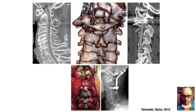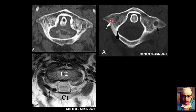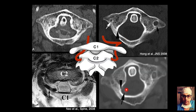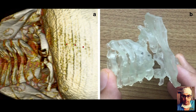In one case example, surgeons recognized a persistent first intersegmental artery and skipped that area completely. In a less fortunate case where no CT angiogram was done pre-op, the foramen transversarium was very rudimentary with deep notching — the vertebral artery was going inside the C1 ring rather than through the foramen transversarium. Choose wisely: some screws are risky with respect to vertebral artery anatomy. Know your pre-operative CT planning, and sometimes 3D printed models help make this assessment.